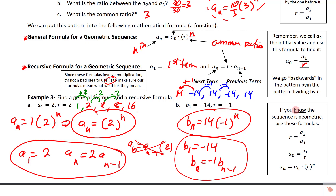To summarize the key formulas: to find the common ratio, do a_2 ÷ a_1. To find the zeroth term (initial value), take the first term and divide by the common ratio. The general formula is always a_n = a_0 · r^n. These formulas are a lot to track, but we'll practice with plenty of examples — it's one of those ideas that needs time to sink in.